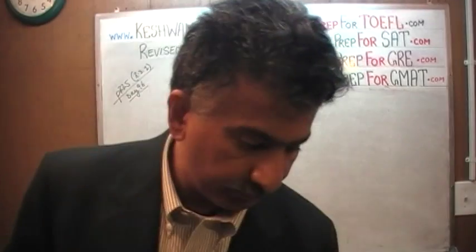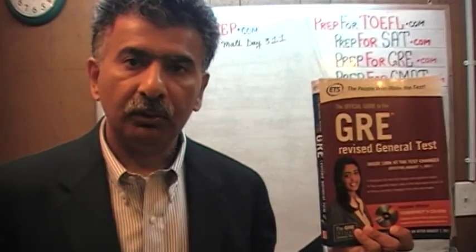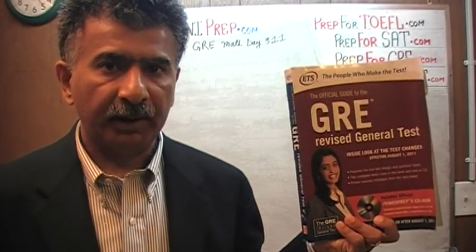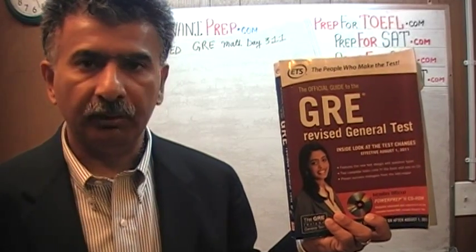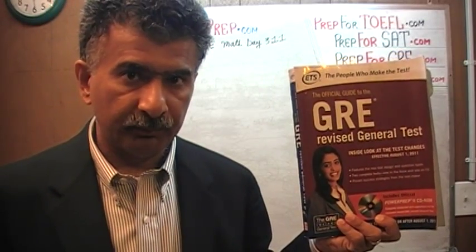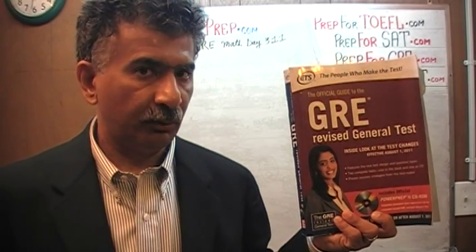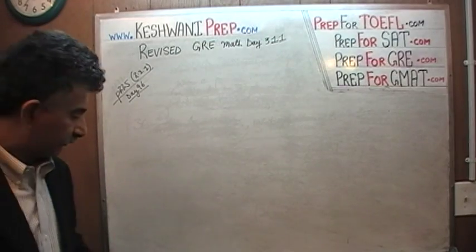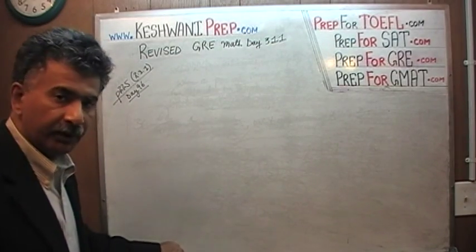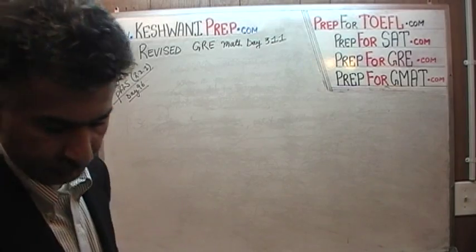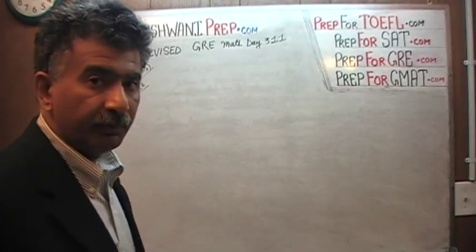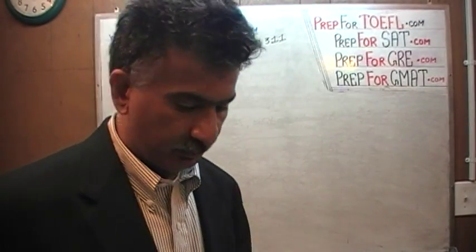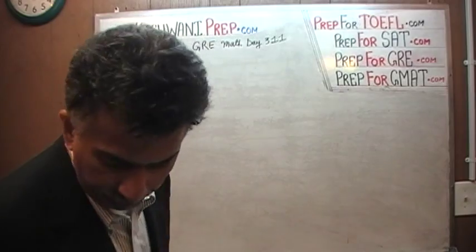The problem on page number 225, on the very top of the page, 2.3.1, is the exact same problem that appeared in the first edition of the revised GRE. We have already solved all the problems from this book. If you are interested in watching the original solution, you will find it on day number 96. Today we are going to redo it at a little bit of a faster pace. If you need more detailed help with every single step, you are more than welcome to watch the original one. So, here we go.